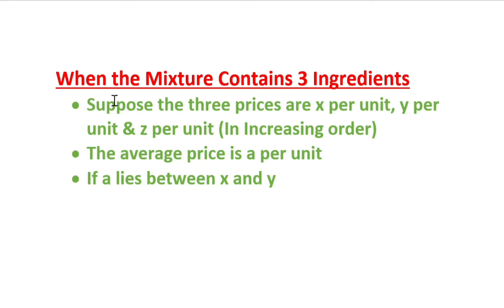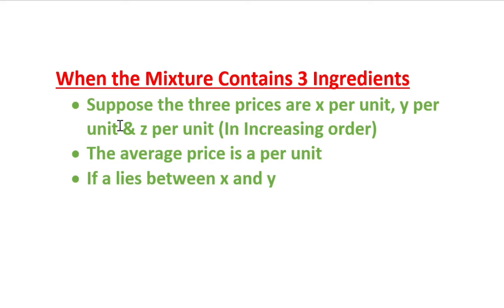Today we will discuss what happens when the mixture contains three ingredients. There is a set of procedure we need to follow in order to gain the solution in a very easy way. Suppose the three prices are x per unit, y per unit, and z per unit — all in increasing order, for example 20, 40, 60.